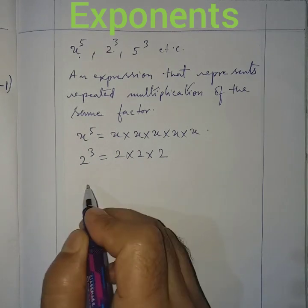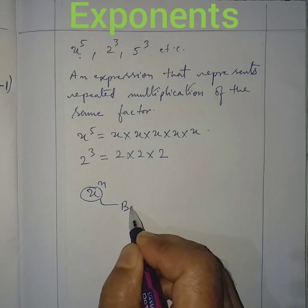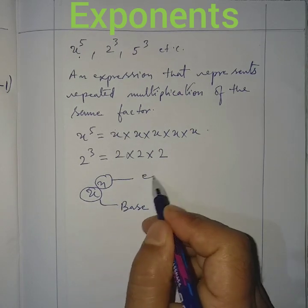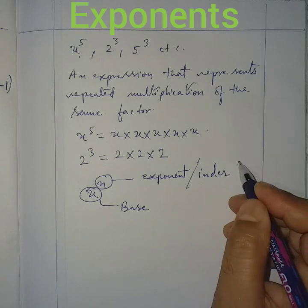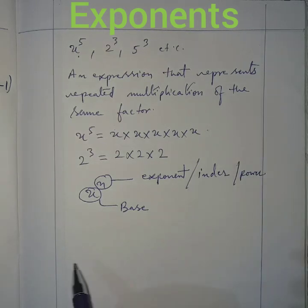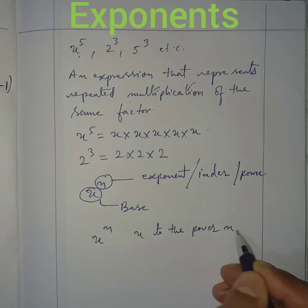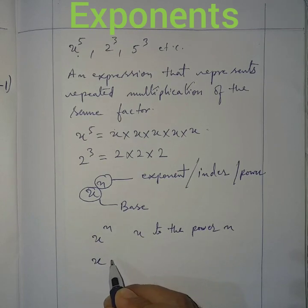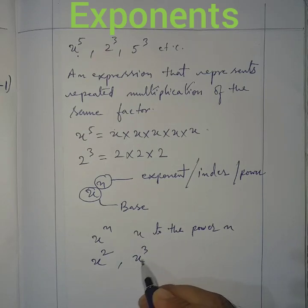If we write a number like x to the power n, the lower part x is called the base of the exponential form, and the upper part n is called the exponent — also named as index, or sometimes called the power. x to the power 2 is read as 'x square,' and x to the power 3 is read as 'x cube' or 'x to the power 3.'